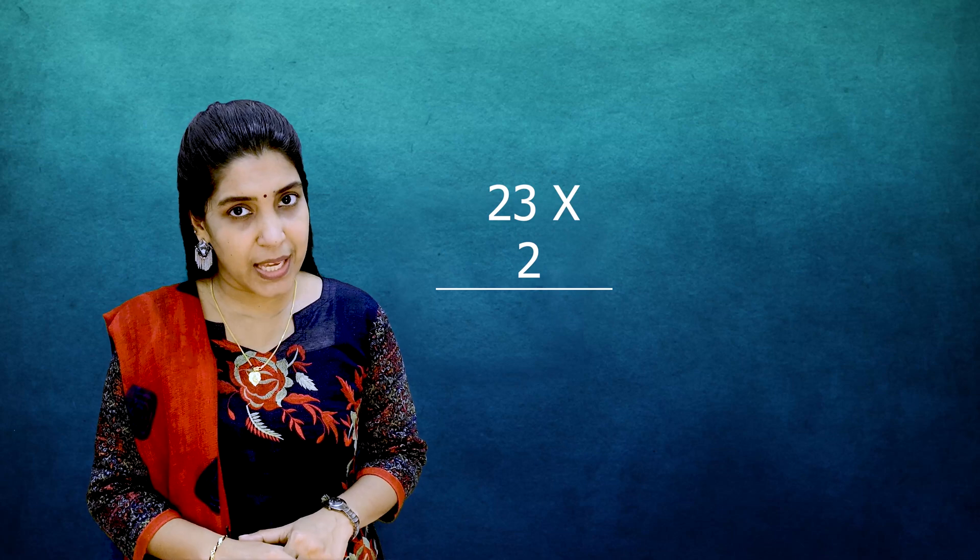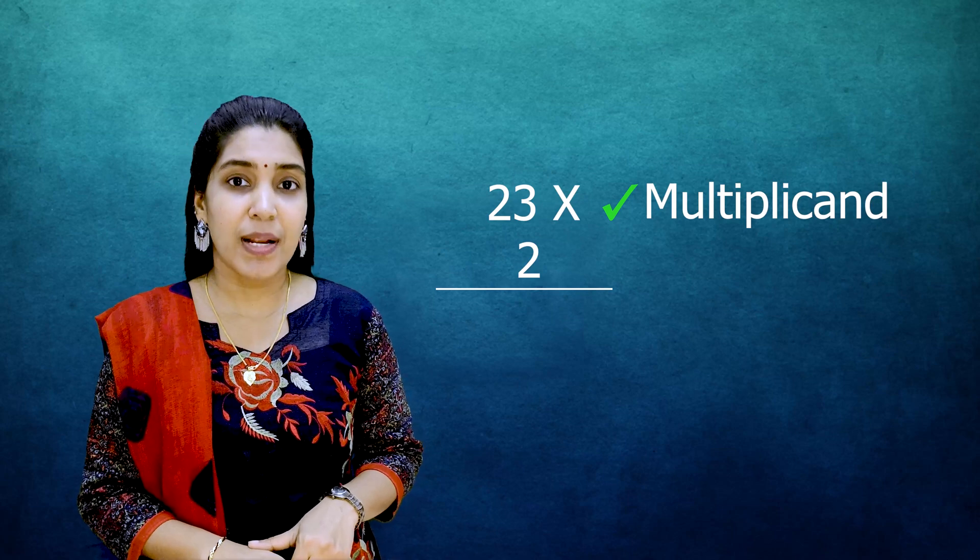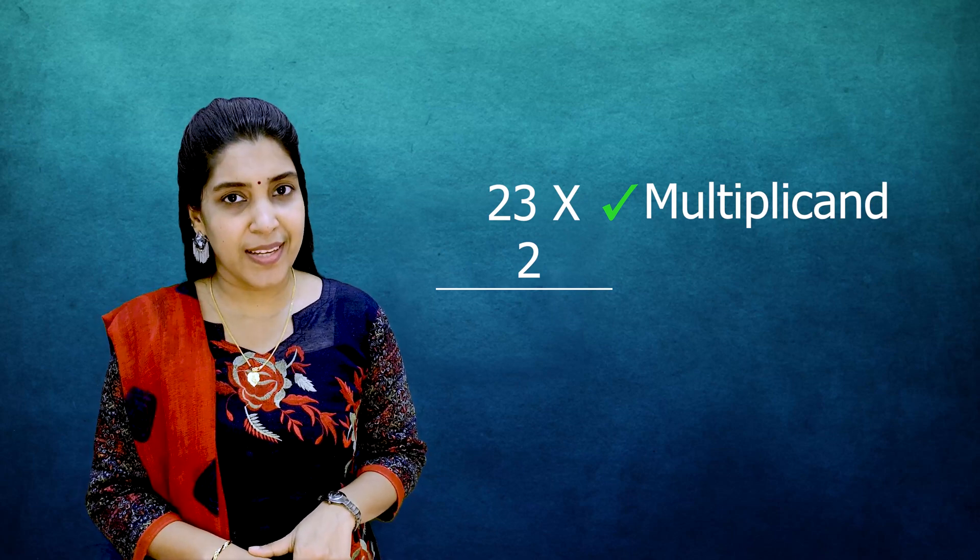Here I have two numbers: 23 into 2, or we can say 23 multiplied by 2. So 23 is what we call the multiplicand. The number to be multiplied is what we call the multiplicand.